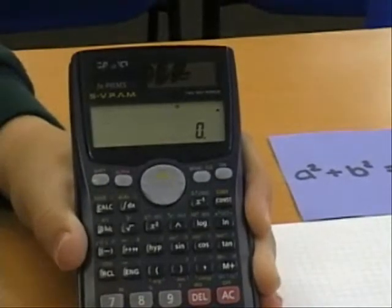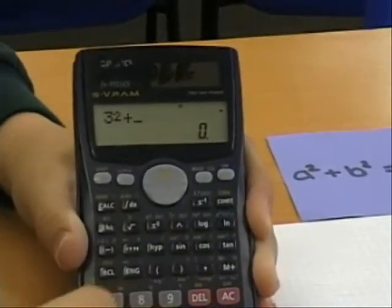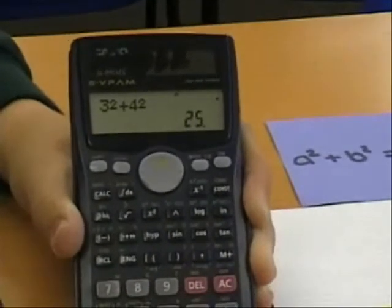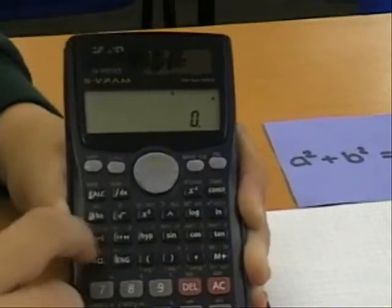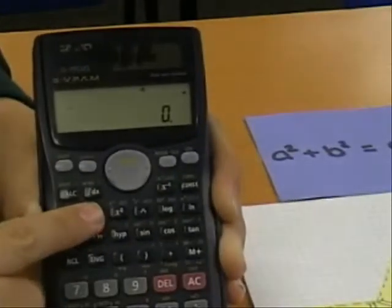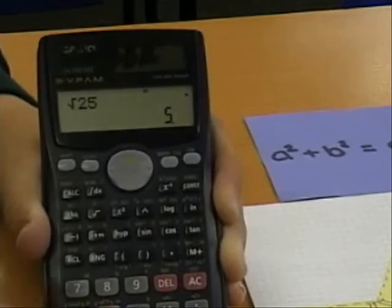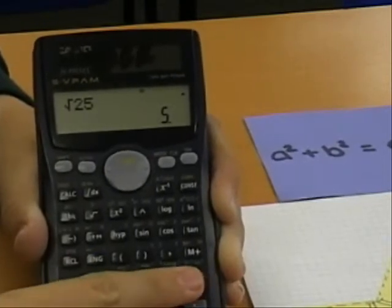If you add 3 squared and 4 squared, or 9 and 16, you get 25, which is also 5 squared. Finally, to find the length, you take the square root of 25, which is 5 centimeters. Remember to work the units.